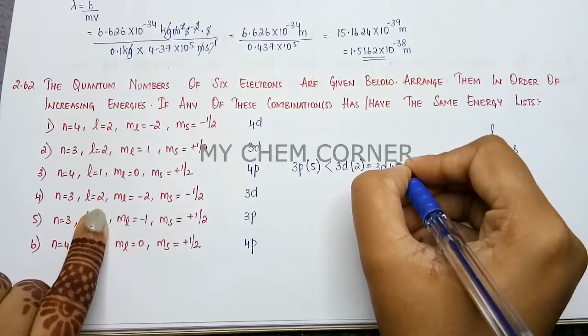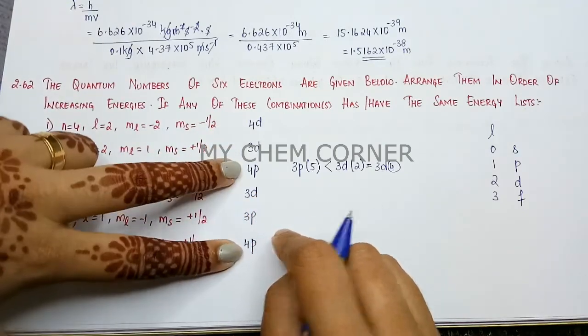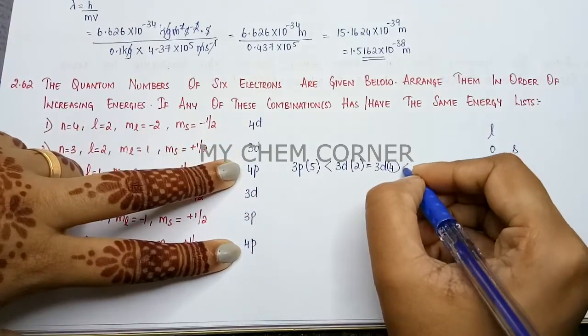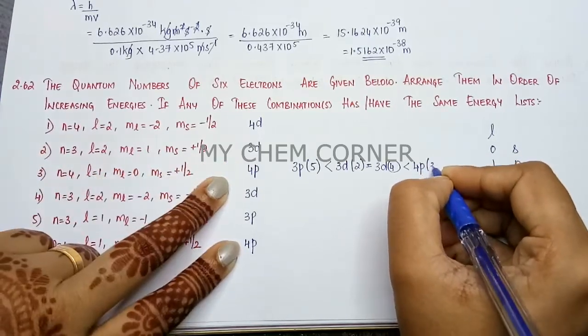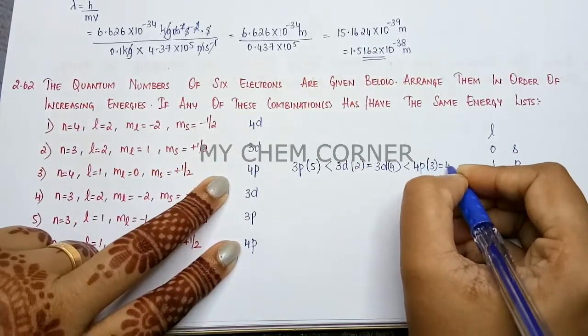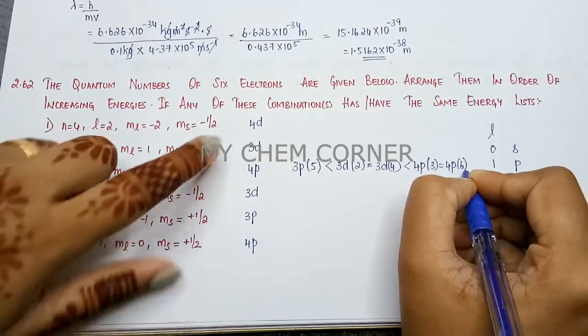After 3d we have 4p. 4p again, there are two. So here we write 4p of 3, which is equal to 4p of 6 also. And the last one we have is 4d, so 4d of 1.